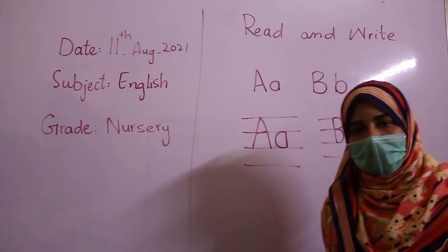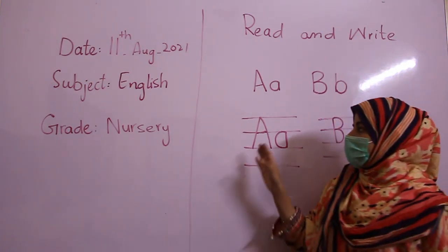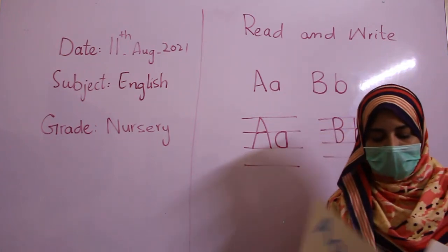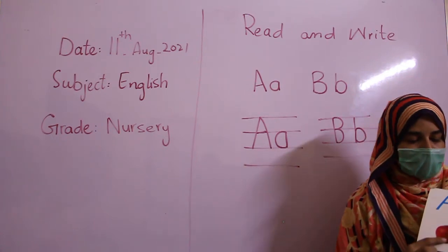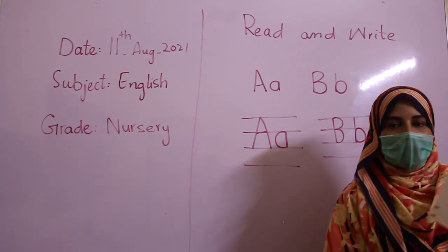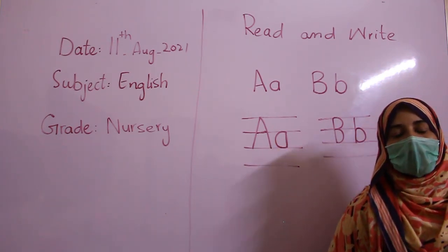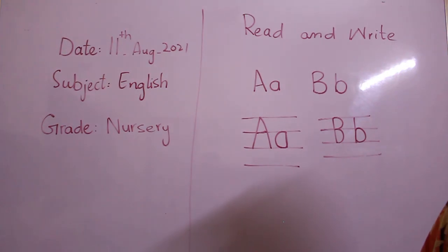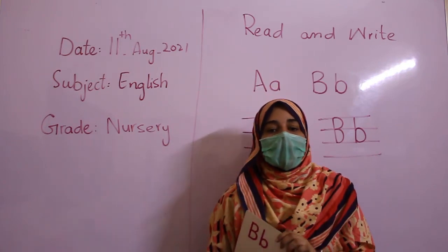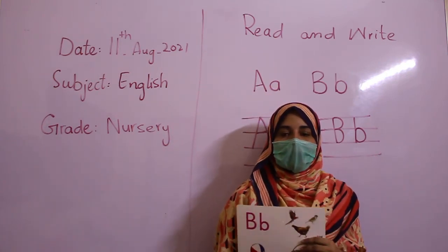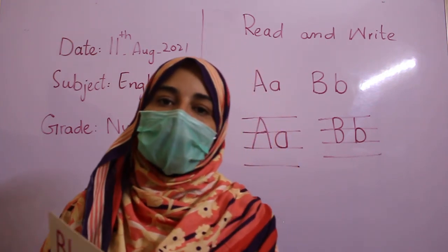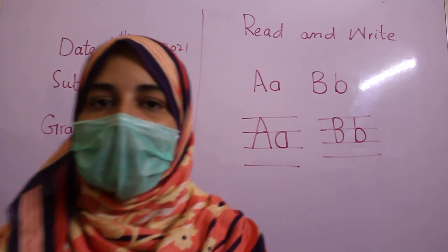So students, this was our topic of English copy work. In English copy work we had done A — apple — and then B — purse, basket, and ball. You have to do the work in your copy in a proper formation. Take care of yourself. Allah Hafiz, and I hope you have understood. You will do your work correctly. Take care of yourself. Allah Hafiz.